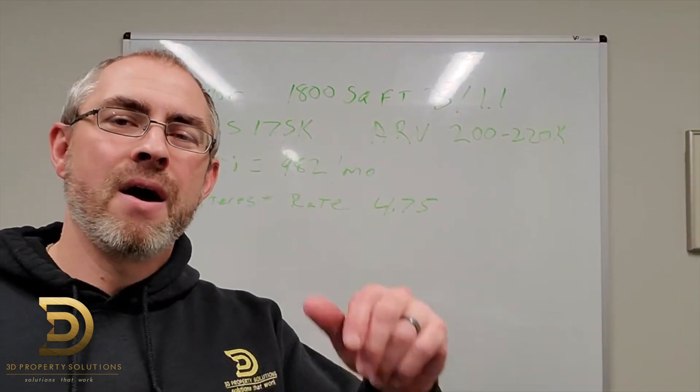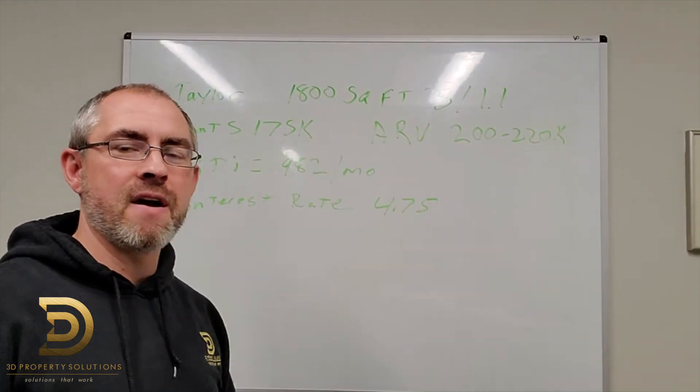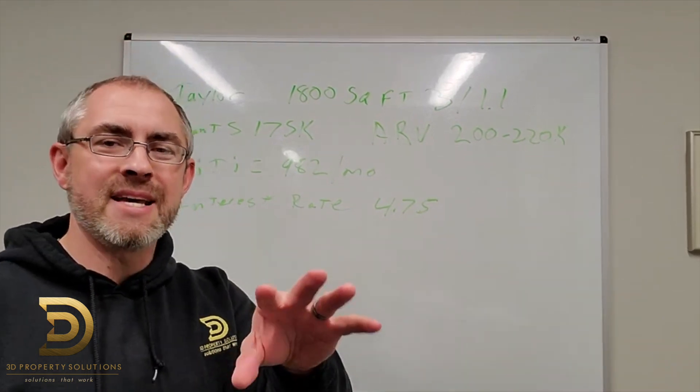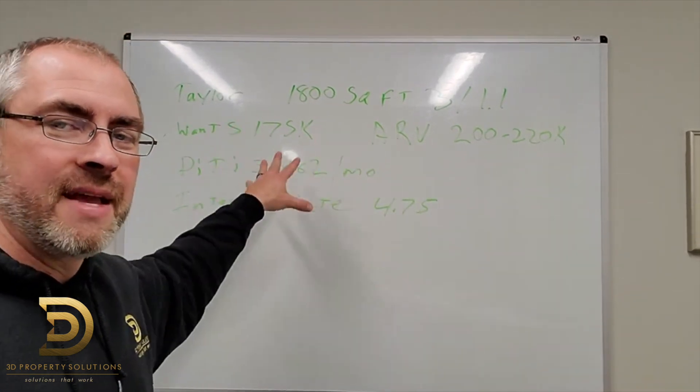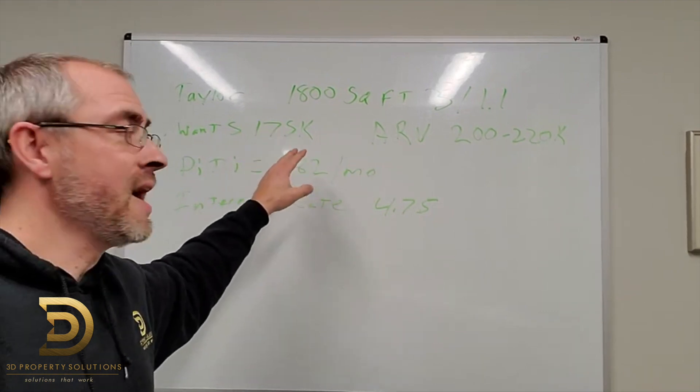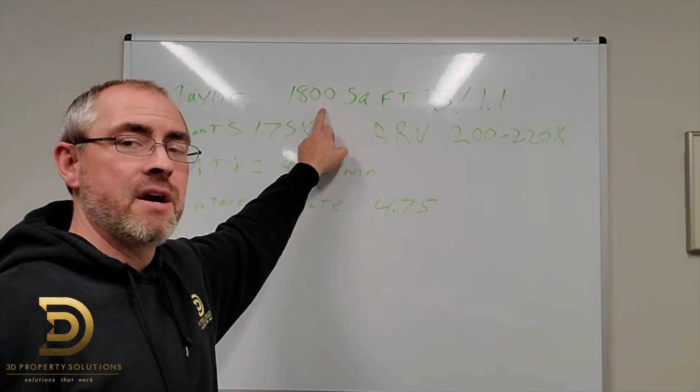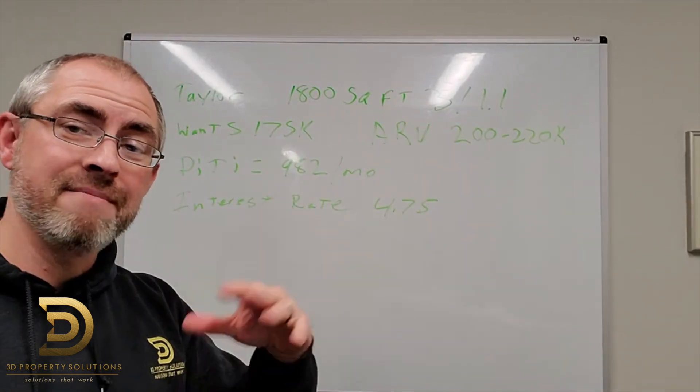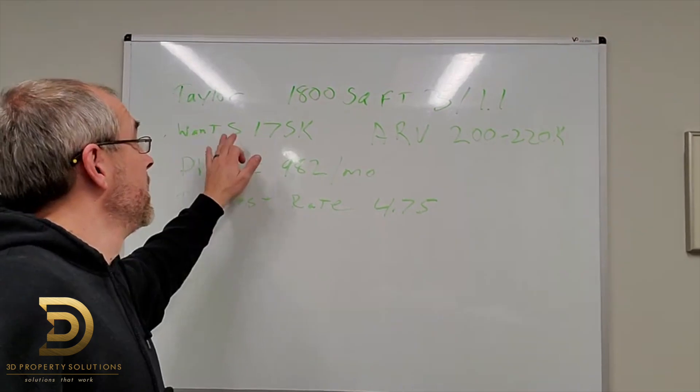I'm analyzing a deal right now just behind me. I apologize for the glare off the whiteboard, but it's what I got to deal with right now. But the concept of the deal remains the same. Let's run through it real quick. I've got a house in Taylor. It's about 1,800 square feet, three bedrooms, bath and a half. It's on a slab. It's got a garage. That's what's got going for it.